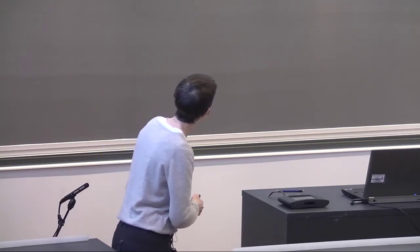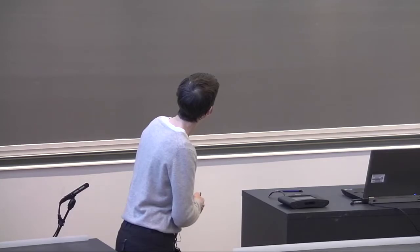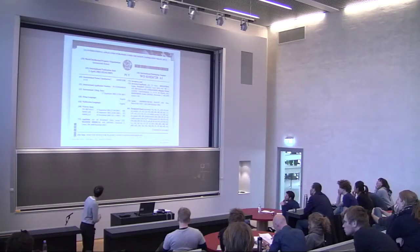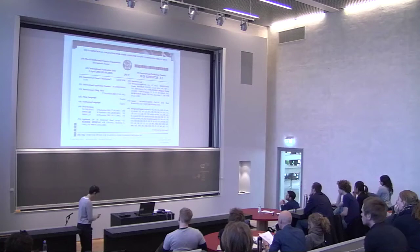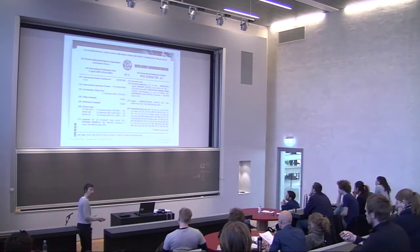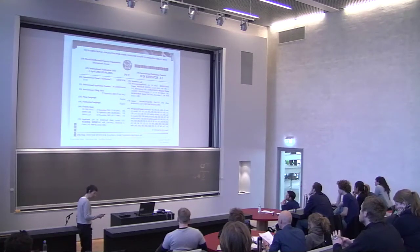When this is filed, you're saying I am filing one application which is this international application and I'm doing it because I wish to have the possibility at some time in the future of having rights in one or all of these different countries. And somewhere here there should be EP which I can't see now, which would be an application for Europe which would then cover all countries in Europe.